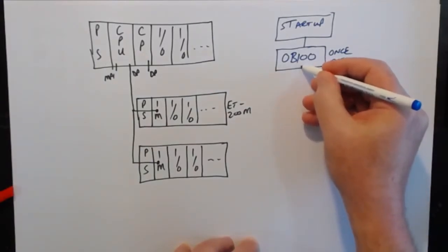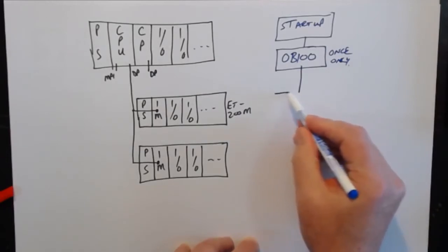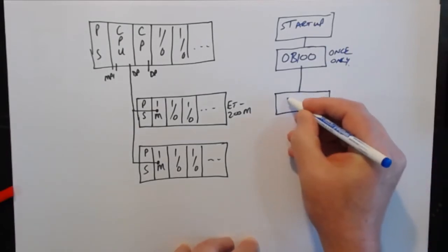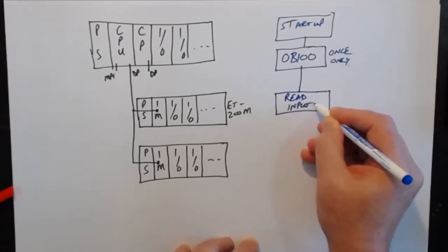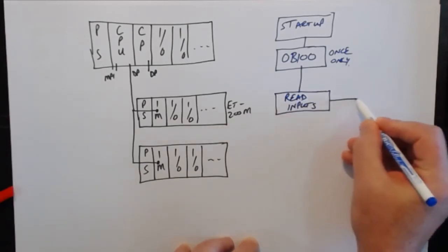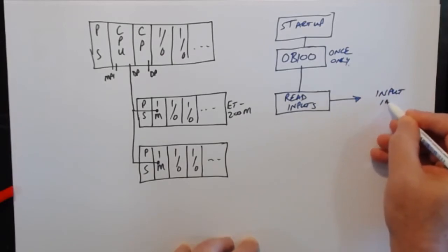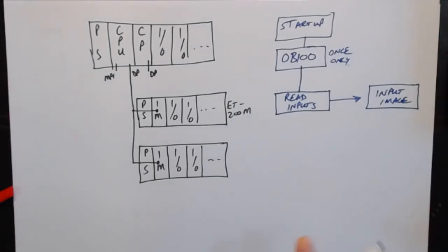After OB100 is called, it runs into the main loop. The first thing that happens, all the inputs are read from the hardware and put into memory in what they call an input image. And your program will use information from the input image rather than directly from the inputs.